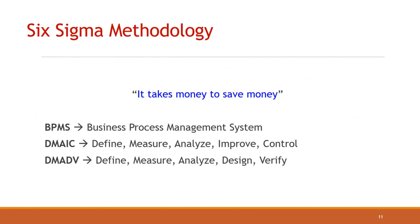Regarding Six Sigma methodology: it takes money to earn or save money. There are generally three methodologies used — officially DMAIC and DMADV, with a third being the Business Process Management System (BPMS), which is less popular but also effective. DMAIC stands for Define, Measure, Analyze, Improve, and Control. DMADV stands for Define, Measure, Analyze, Design, and Verify.